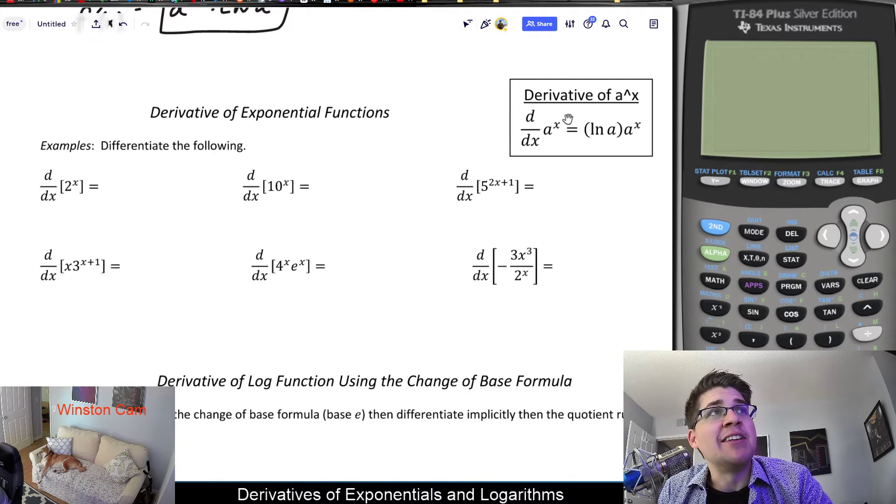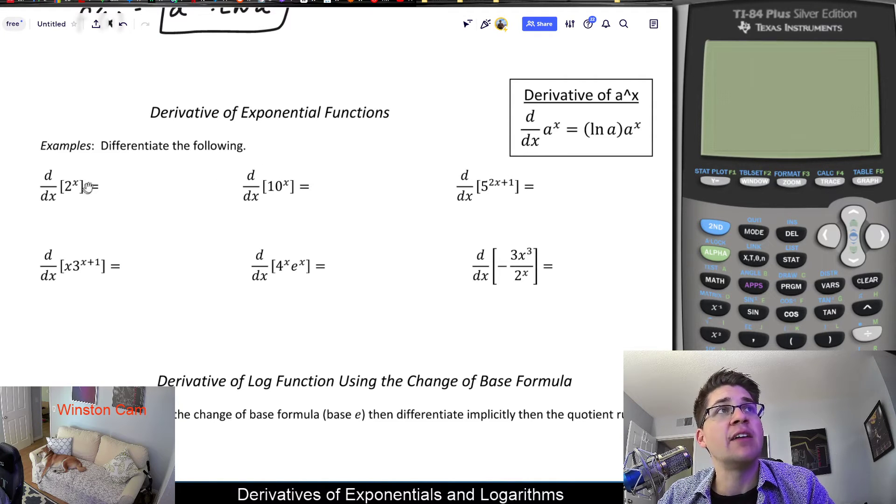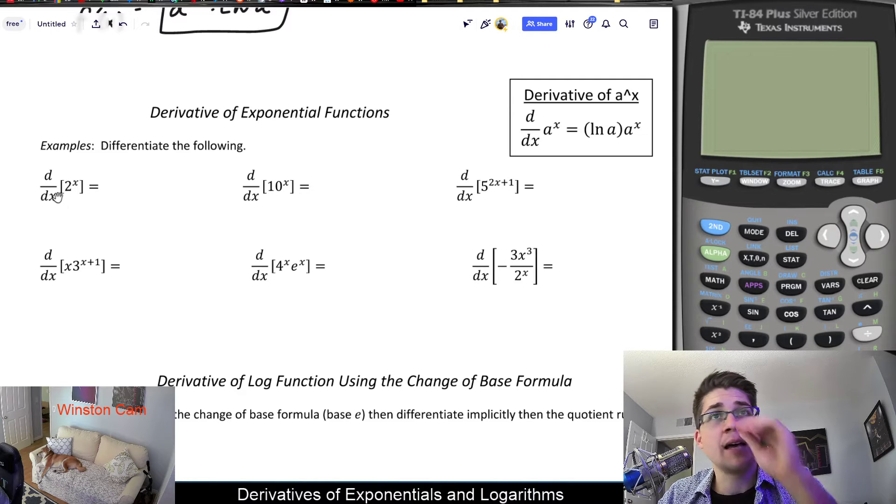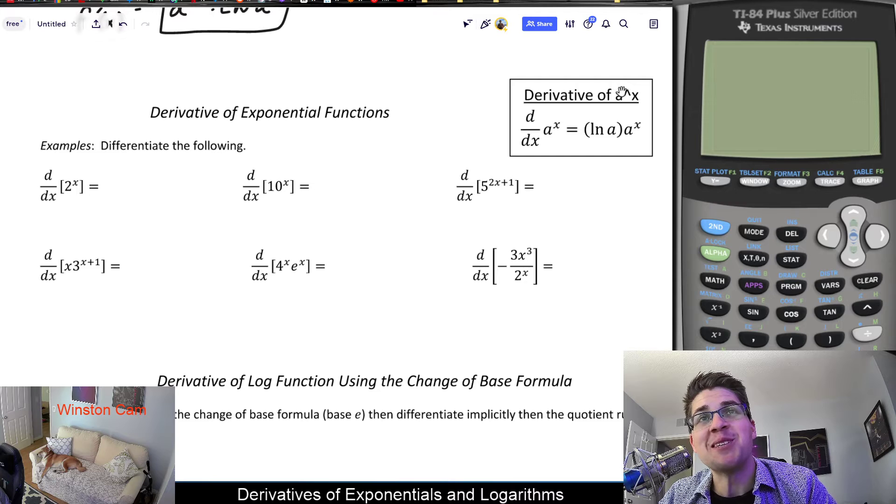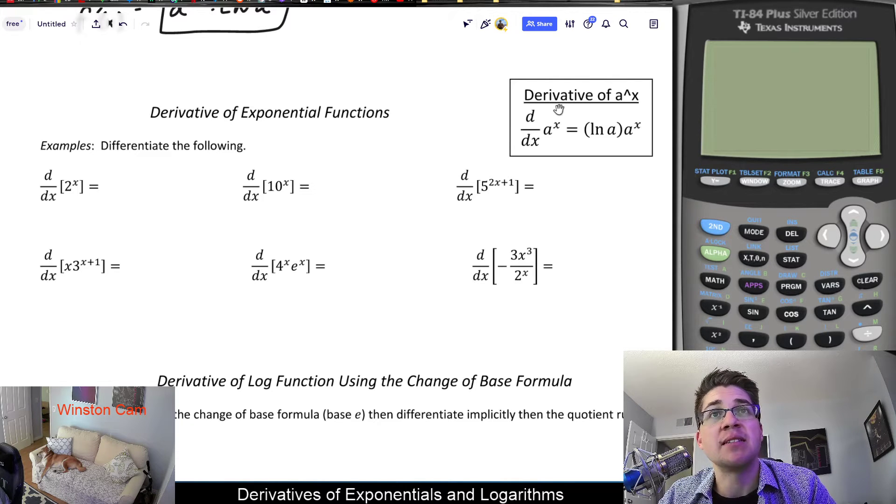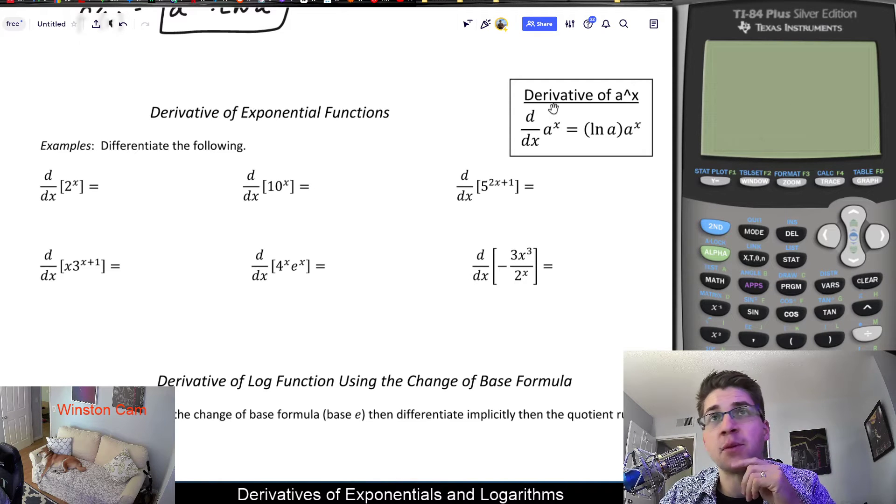But anyways, let's go ahead and do some. So first example says d/dx of 2 to the x. Take the derivative of 2 to the x with respect to x using Leibniz notation. As my rule over here says, no matter what the base is, any base, and technically I probably should be specific that this only works for positive numbers and your typical exponential functions, that should be said, but something that we would not overlook if we were in our textbook or in class.